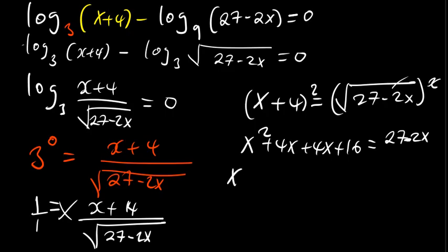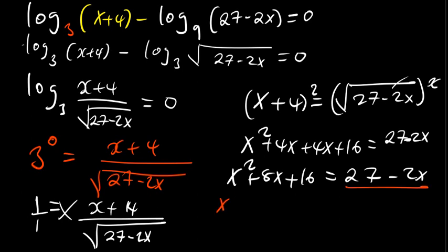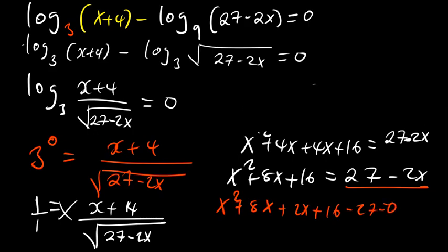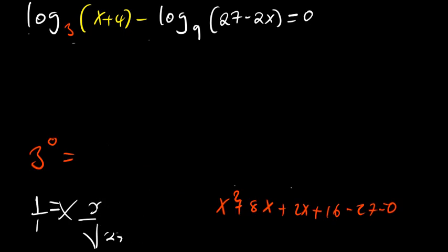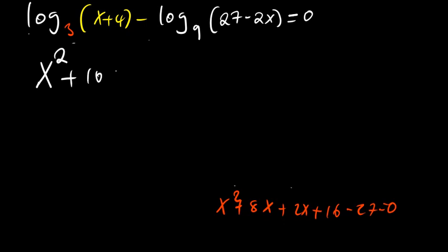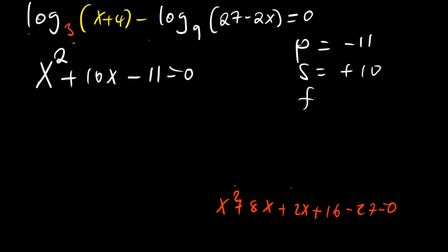So this becomes x² + 8x + 16 equals 27 − 2x. This is a quadratic equation. Shift everything to one side: x² + 8x + 2x + 16 − 27 equals 0, which gives x² + 10x − 11 equals 0. The product I need is negative 11 and the sum is positive 10.